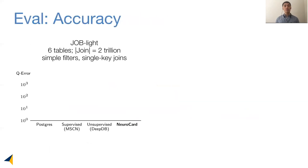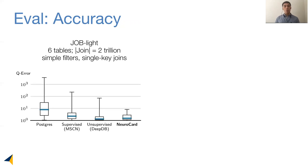So how does NeuroCard perform in accuracy? Here I'm showing a benchmark called JOB-Lite with six tables and simple filter single-key joins. We compare with Postgres, which uses histograms, as well as two learning-based approaches in the literature — one supervised and one unsupervised. We see that NeuroCard can significantly reduce tail errors, sometimes by one order of magnitude, while also achieving highly competitive single-digit median errors.